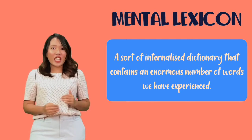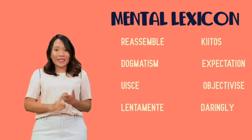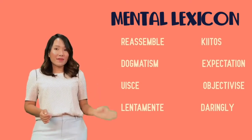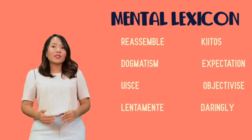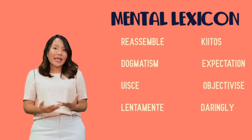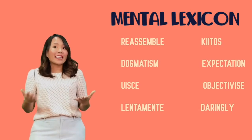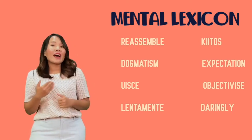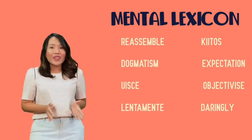The next terminology I'd like to introduce is mental lexicon. Mental lexicon is a sort of internalized dictionary that contains words that we have experienced. For example, you might think that reassemble, dogmatism, expectation, objectivized, and darlingly are words. But ketos, ishka, and lentamente are also words — words of a different language. You may not recognize them because you haven't had experience with the word formation rules of those languages. If you know Finnish, ketos means 'thank you.' If you know Irish, ishka means 'water.' If you've studied Italian, lentamente means 'slow.'